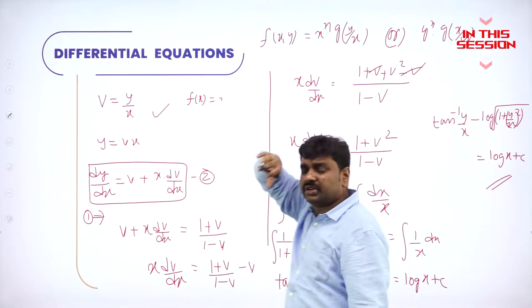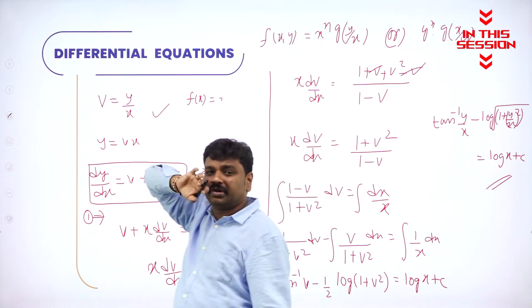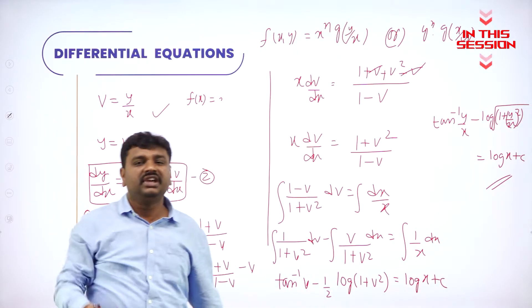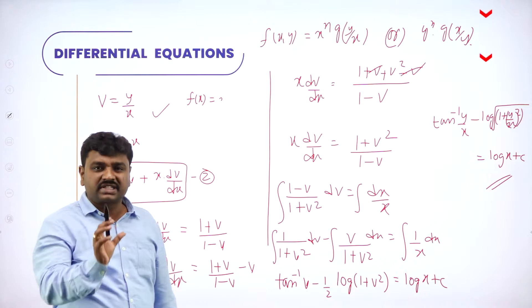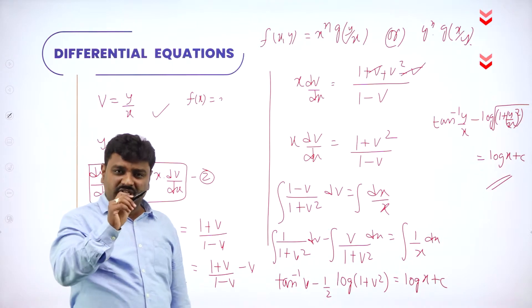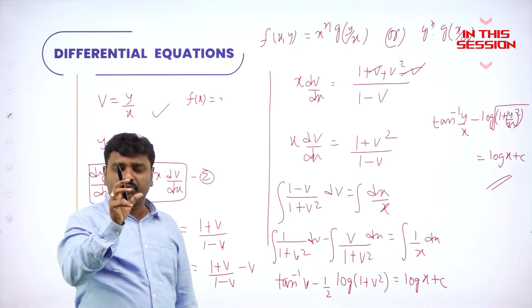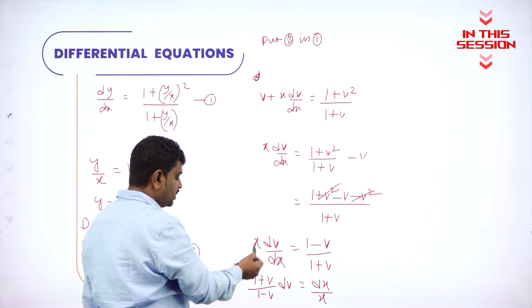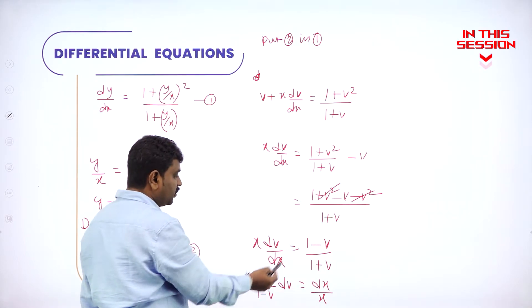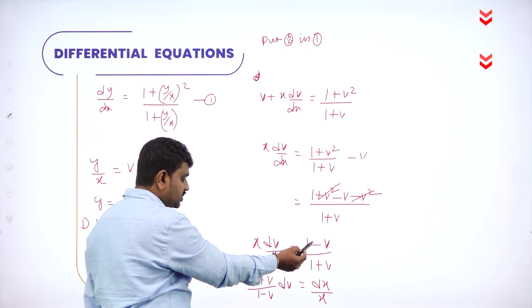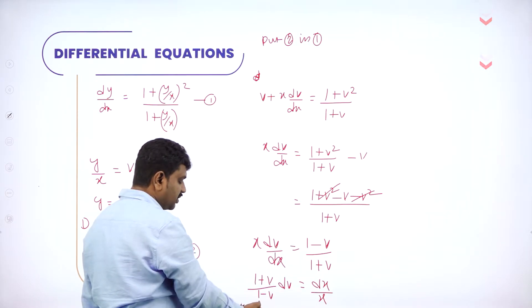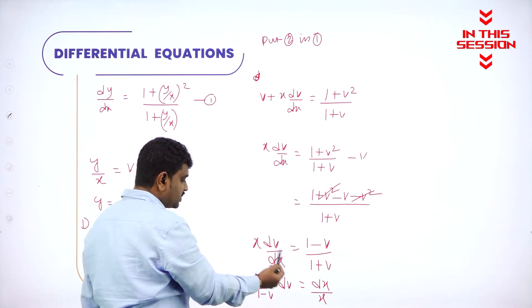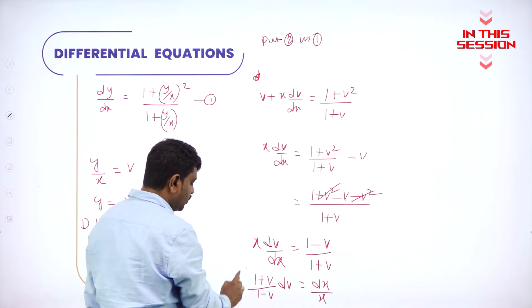Every term in numerator and denominator should have the same degree. X into Y means x-power-1, y-power-1 put together — two. I am separating the variables: denominator 1 plus, bring this side; it will become 1 minus, bring this side; divided by x, transfer that side. Now integrate.